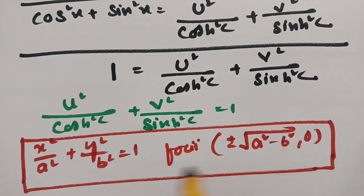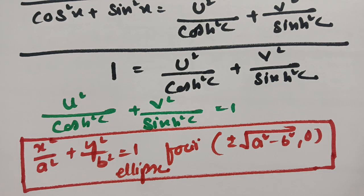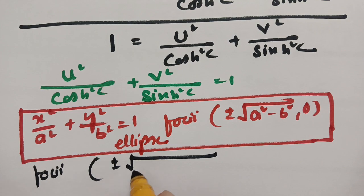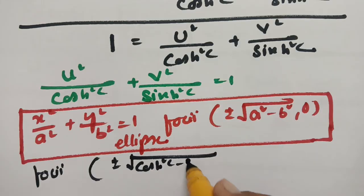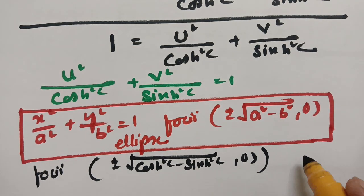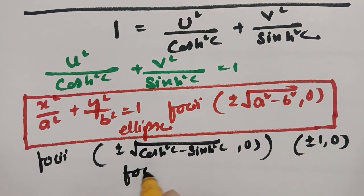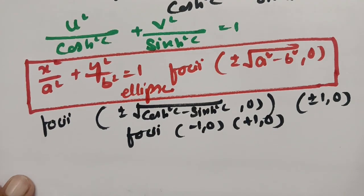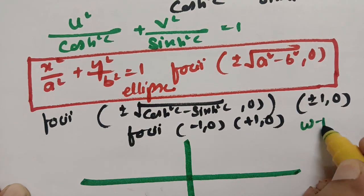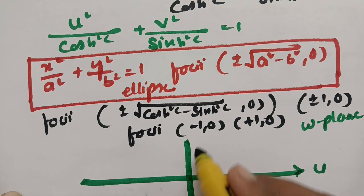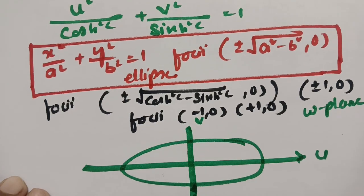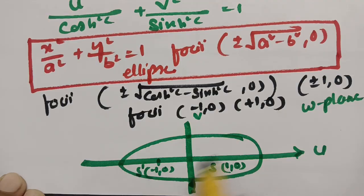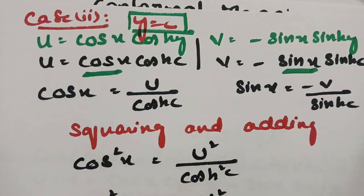This is the equation of an ellipse. The foci are at plus or minus √(cosh² C minus sinh² C) = plus or minus 1, so the foci S and S' are at (−1, 0) and (+1, 0). In the W-plane, when Y equals C, we get an ellipse shape with these foci.